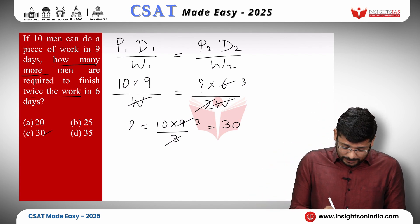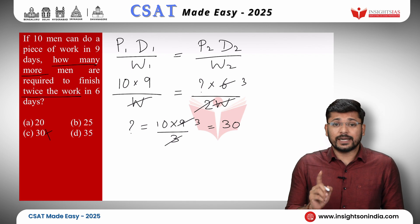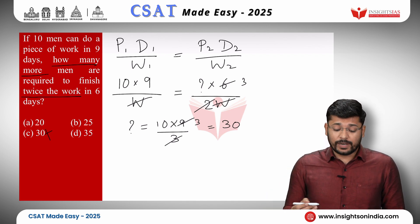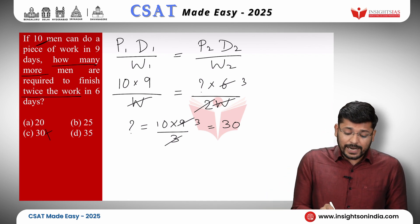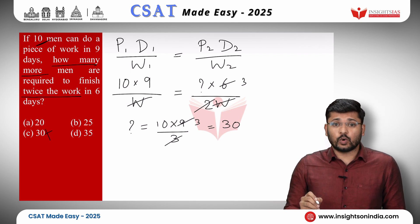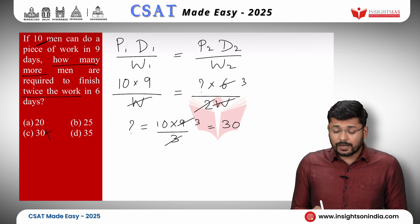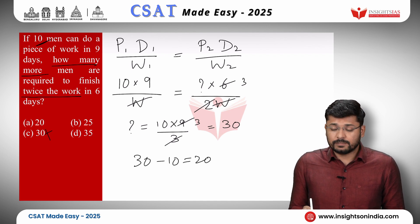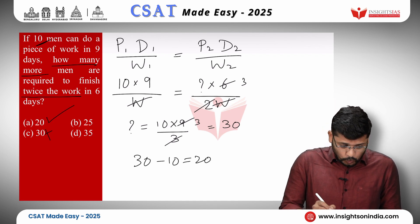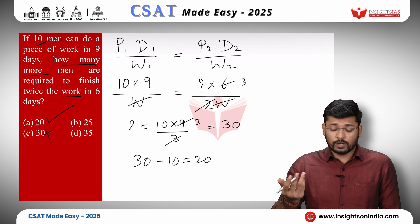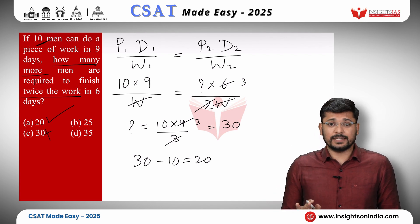But is our answer 30? No, 30 is not our answer. Why? Because they are asking how many more men are required. We already had 10 men. So if we want 30 men total, the difference is 20. We need 20 more men. So your answer is 20 — we need 20 more men to finish twice the work in 6 days.